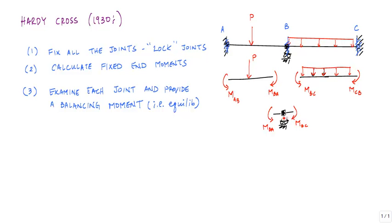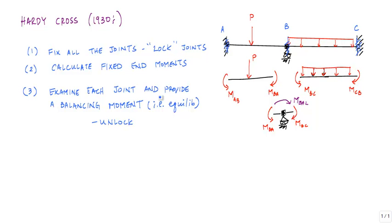What I'm going to do as the engineer is release this joint — I'm unlocking it — and I'm going to provide a moment here, this M-bal, this balancing moment. This M-balancing provides equilibrium at joint B. This is referred to as the unlocking, because really what you're doing is letting it rotate a little bit by providing this M-balance. I like to call it the pop, so for me this technique is actually called a lock and pop. And if you're a breakdancer from the 80s, this is right up your alley.